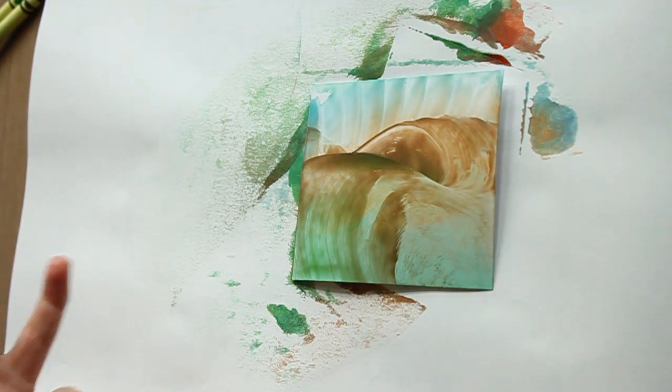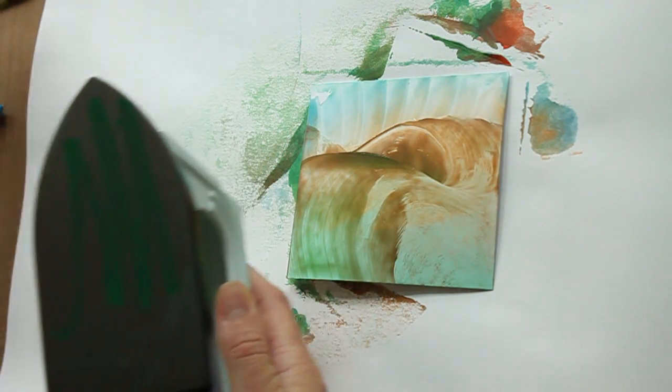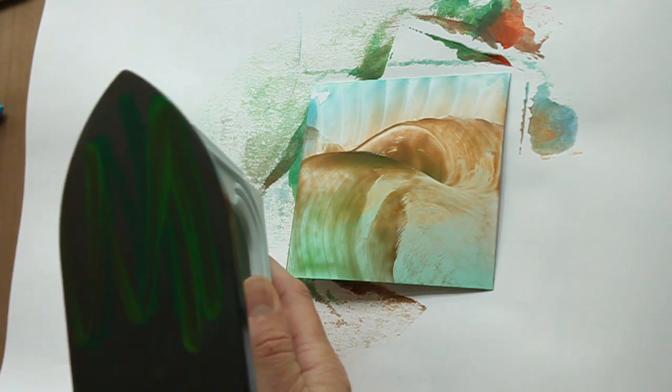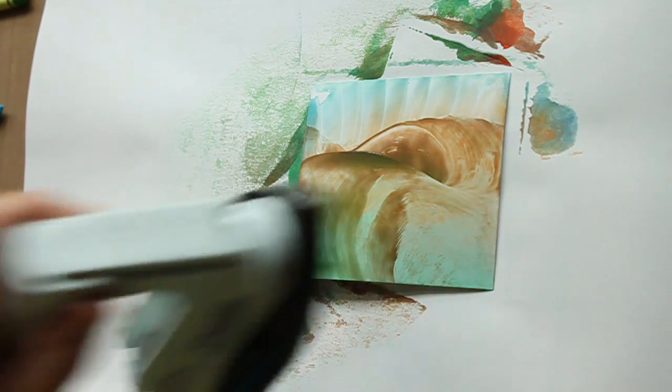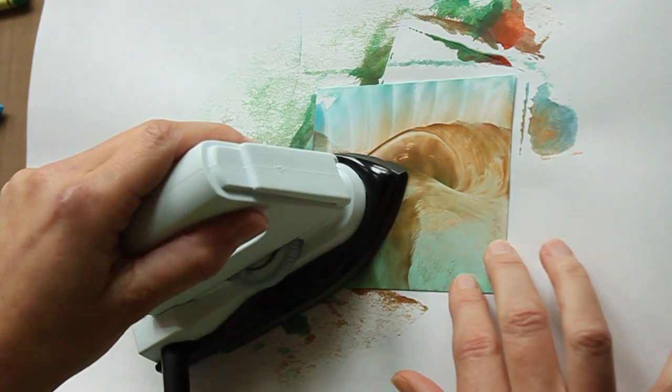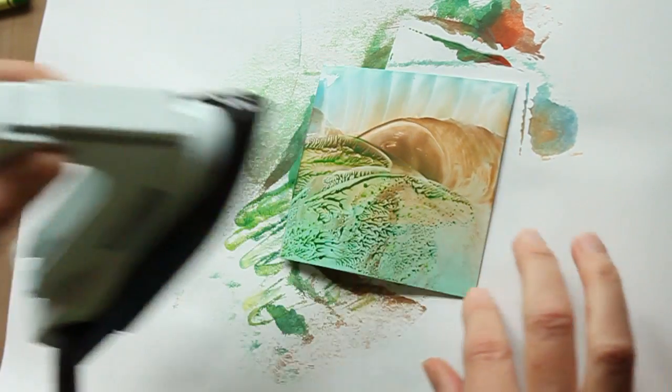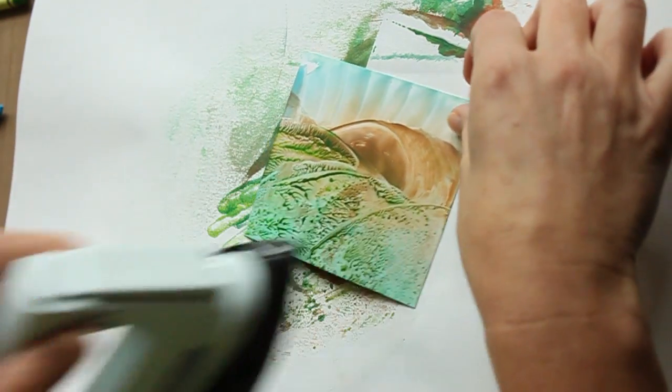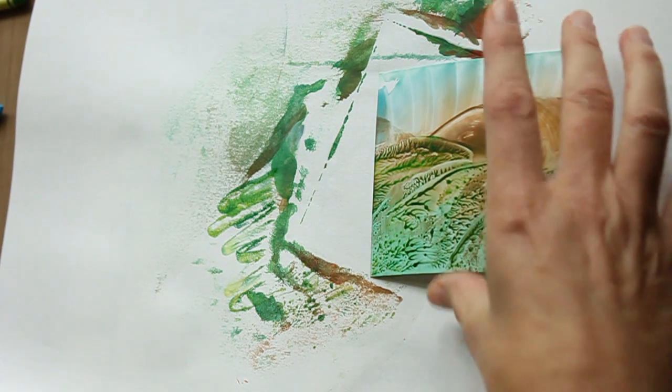Now, if you want to add just a little bit more texture, add some more green. Add yellow to make it lighter. And if you lift it like this—just place it down and lift it—you will get more texture.